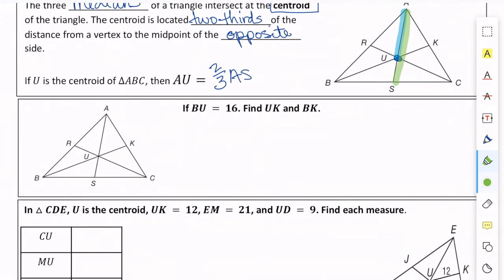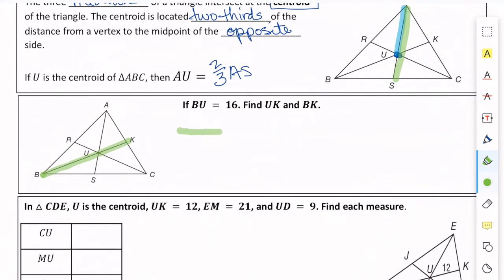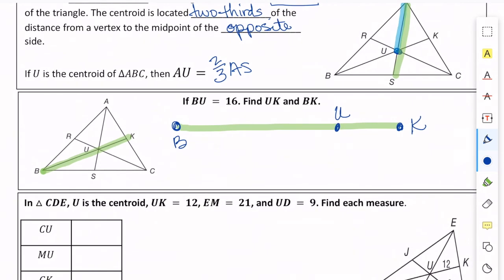Same triangle, but this time we've got BU equals 16 and we need to find UK and BK. So this is the line we're working with. Here's B, then over here is U, and at the end is K. It says that BU is 16 and we need to find BK, the whole median. Based on the centroid theorem, we know that BU is two-thirds of BK.